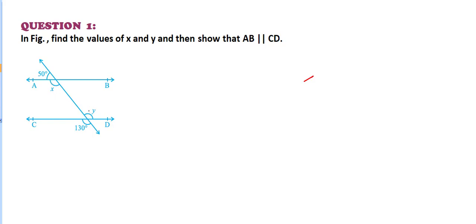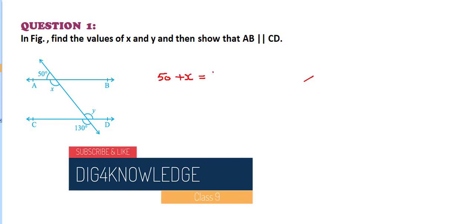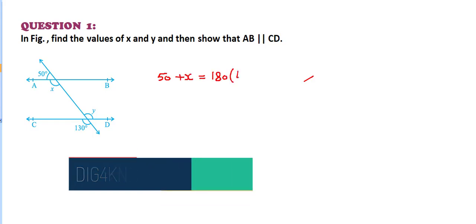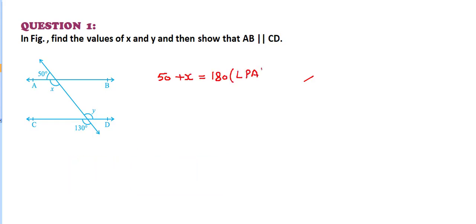50 plus x equals 180 degrees. The reason is linear pair. From here, we get the value of x: 180 minus 50 equals 130 degrees. So the value of x is 130 degrees.